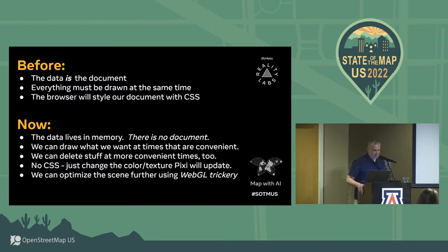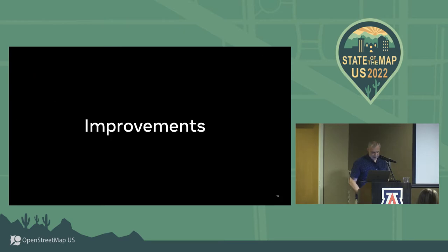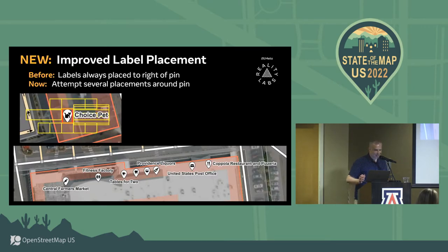In summary, the new renderer represents a huge shift in how we think about data in Rapid. Before, the data, DOM, and styling were kind of locked together. Now that's no longer true — there's no SVG document, no CSS, and the drawing happens much quicker. We've also put a couple of improvements in now that we have this new renderer.